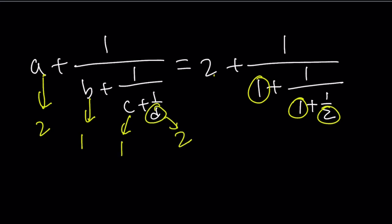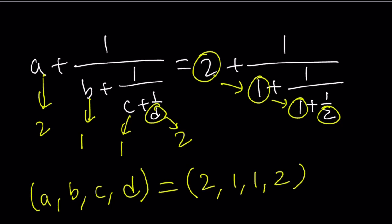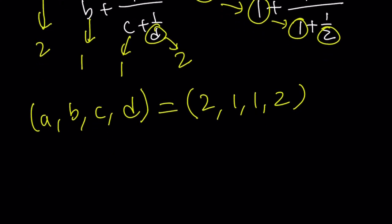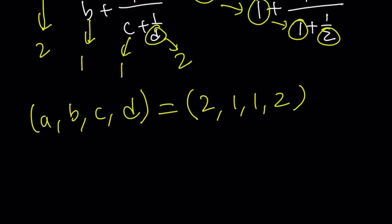So I got my values. A, B, C, D. The answer is 2, 1, 1, 2. Now, the problem didn't ask for anything. It was just giving you an equation. But the question could be something like, what is A plus B plus C plus D? Once you find A, B, C, D, you can find everything.